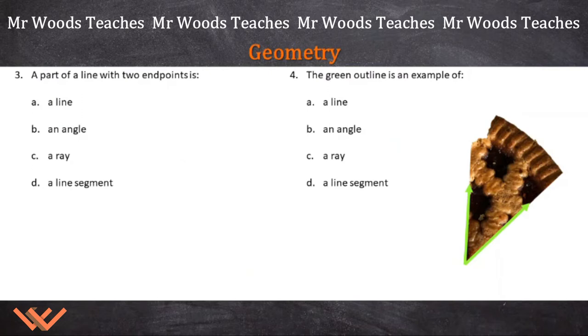Let's get into some geometry. Number 3 reads: a part of a line with two endpoints. What is a line? This is a line. An angle is like this. A ray has an endpoint going out. A line segment has a point here, a point there, A and B. So this is a part of a line with two endpoints. That's going to be my line segment.